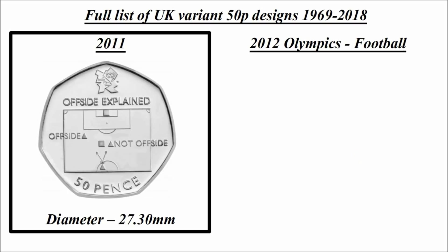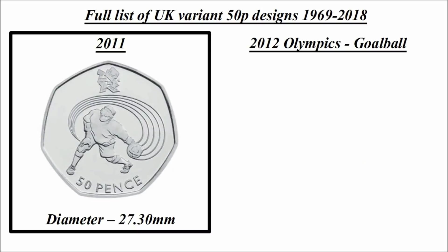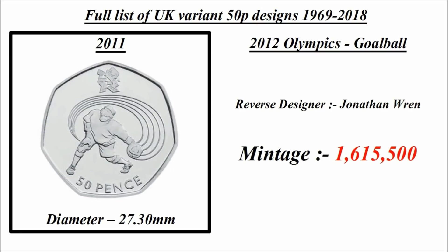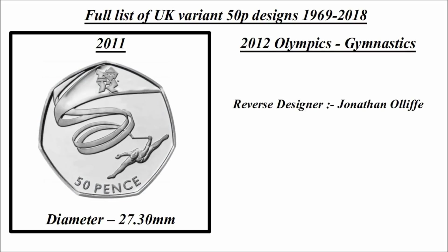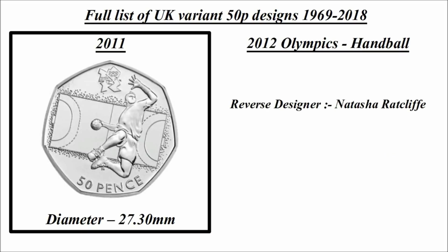Olympics football: reverse designer Neil Wolfson, mintage 1,125,500. Olympics goal ball: reverse designer Jonathan Wren, mintage 1,615,500. Olympics gymnastics: reverse designer Jonathan Oliffe, mintage 1,720,813. Olympics handball: reverse designer Natasha Ratcliffe, mintage 1,676,500.